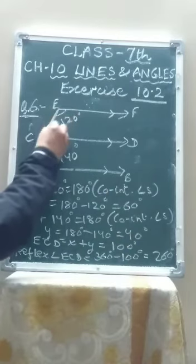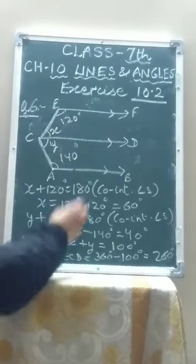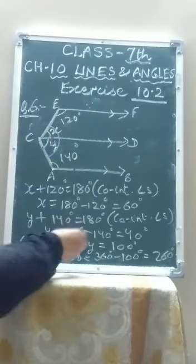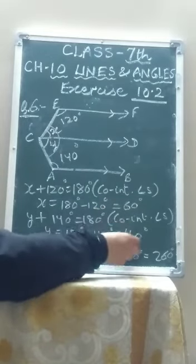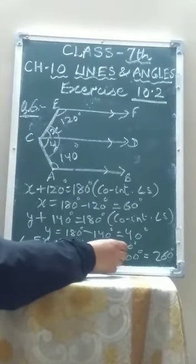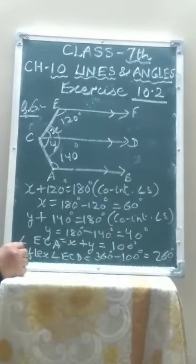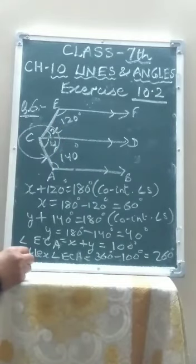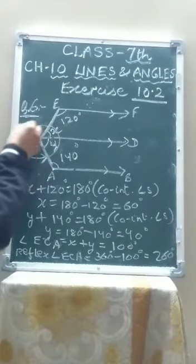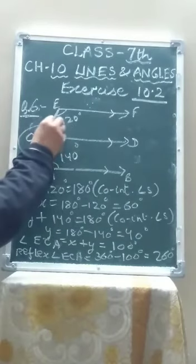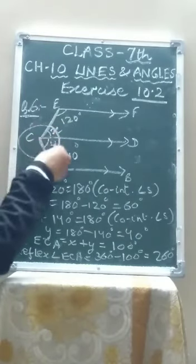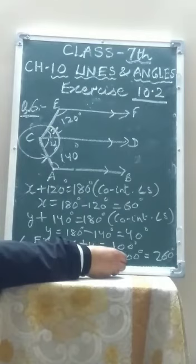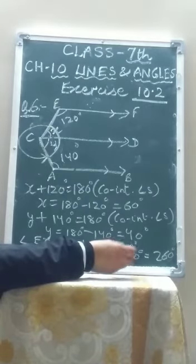Now what will be angle ECA? It is the total of X plus Y, which is 60 degrees plus 40 degrees, equaling 100 degrees. But the question asks for the reflex angle ECA. Reflex means the larger angle. Since the total angle around a point is 360 degrees and the interior angle ECA is 100 degrees, the reflex angle ECA equals 360 minus 100 degrees, which is 260 degrees.